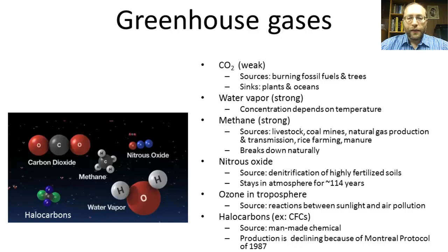A sink is something that will absorb carbon dioxide. Plants are a sink because through photosynthesis they absorb carbon dioxide from the atmosphere. The oceans are a sink because they are able to dissolve carbon dioxide. There are of course natural sources of carbon dioxide too — for example, when almost any organism breathes, they release carbon dioxide. That is not listed here because it is a natural source.